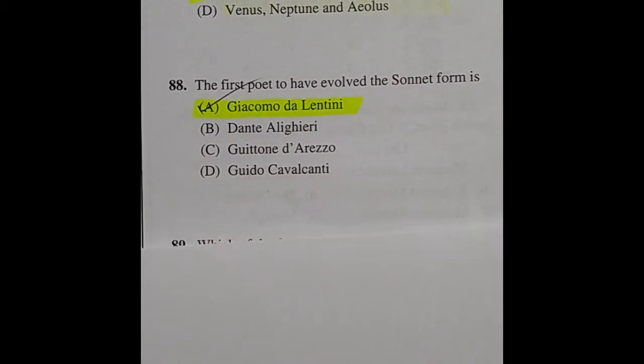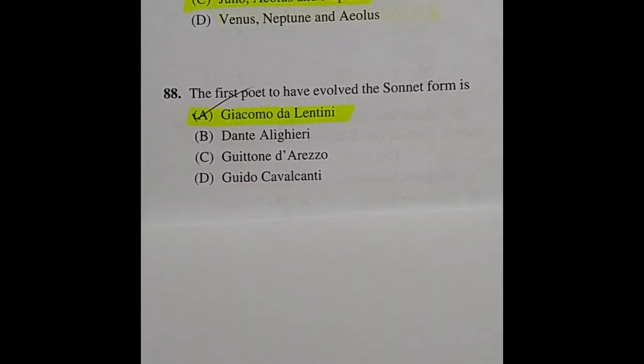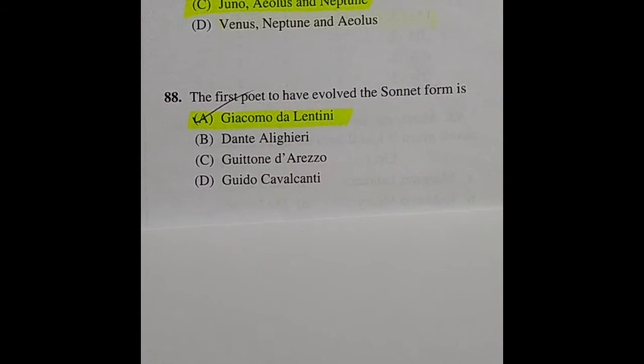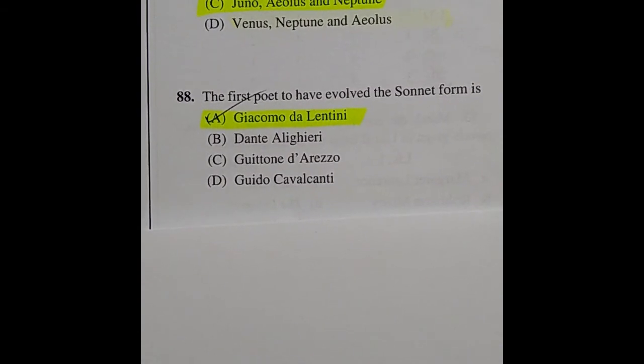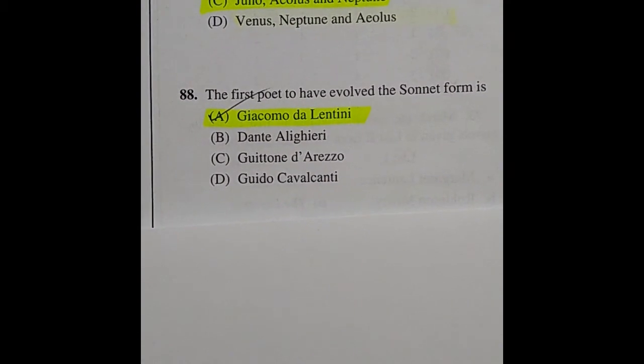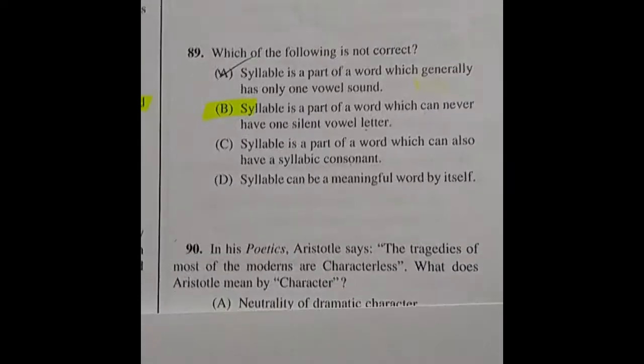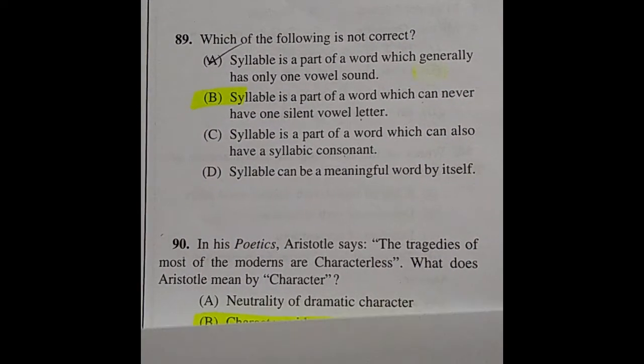Question 88: The first poet to have evolved the sonnet form is — option A: Giacomo da Lentini.